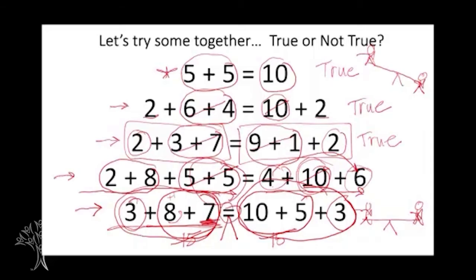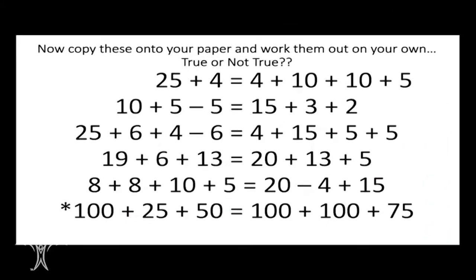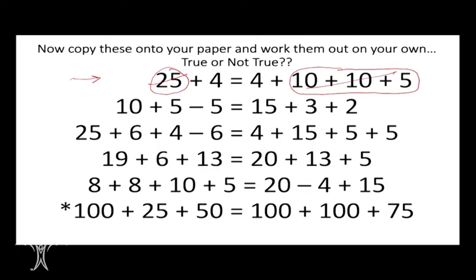Each side of the equal sign can look different, but we have to have the same value in order to use our equal sign. Let's go through the practice problems together. The first one: 25 plus 4 equals 4 plus 10 plus 10 plus 5. I see 25 on the left, and on the right I see 10 plus 10 plus 5, which also makes 25. Those cancel each other out. Then I have 4 and 4, which are balanced — so this equation is true.